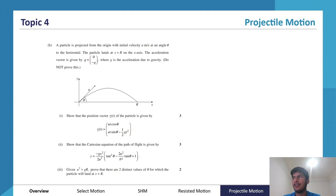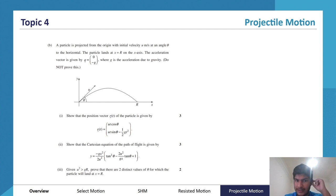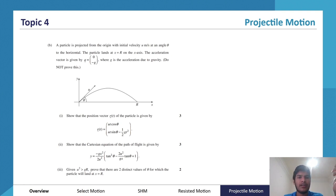You probably wouldn't expect to see this level of difficulty in an extension 1 exam, but it's still possible to be done with extension 1 techniques. Let's try and run through this question as quickly as possible. We've got a particle projected from the origin with initial velocity u at an angle theta to the horizontal. The particle lands at x equals R on the x-axis.